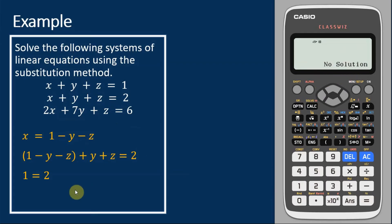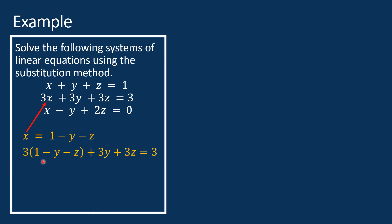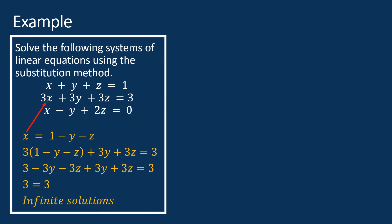Again, we have a system of equations with three unknowns. Take note that the first and second equations are similar — the second equation is three times the first equation. Let's solve this using the substitution method. Solving the first equation for x gives x equals 1 minus y minus z. Substituting into the second equation: 3(1 minus y minus z) plus 3y plus 3z equals 3, which simplifies to 3 equals 3. This indicates that the system has infinitely many solutions.